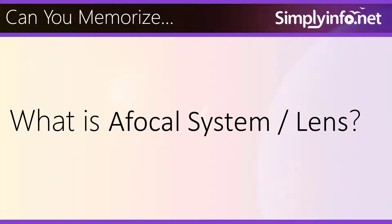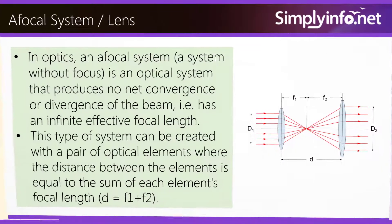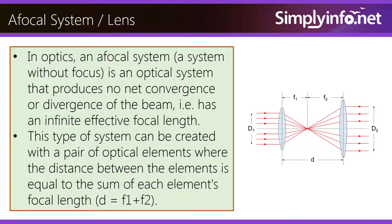Can you memorize what is an afocal system lens? In optics, an afocal system, a system without focus, is an optical system that produces no net convergence or divergence of the beam. That is, it has an infinite effective focal length. This type of system can be created with a pair of optical elements where the distance between the elements is equal to the sum of each element's focal length: d = f1 + f2.